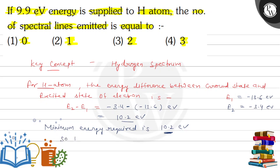Hydrogen atom will not absorb energy less than 10.2 electron volt, so no spectral line will be observed.